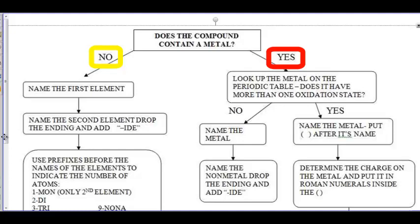Hi, everybody. Welcome back. This is Unit 5, Lesson 2. Today we're going to learn how to name Type 3 compounds. We're dealing with binary compounds, only two elements.